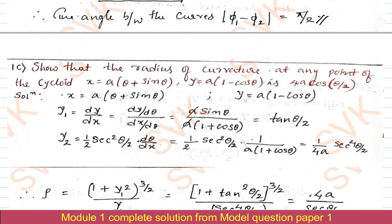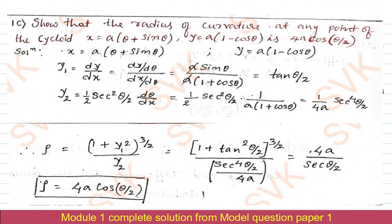Question 1c: show that the radius of curvature at any point of the cycloid x = a(θ + sinθ), y = a(1 − cosθ) is 4a·cos(θ/2). Considering the given parametric curves, dy/dx = (dy/dθ)/(dx/dθ). The derivative of y with respect to θ: a is constant, derivative of 1 is 0, minus derivative of cosθ is −sinθ, so dy/dθ = a·sinθ.